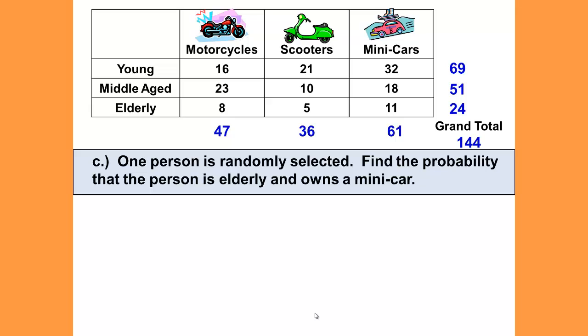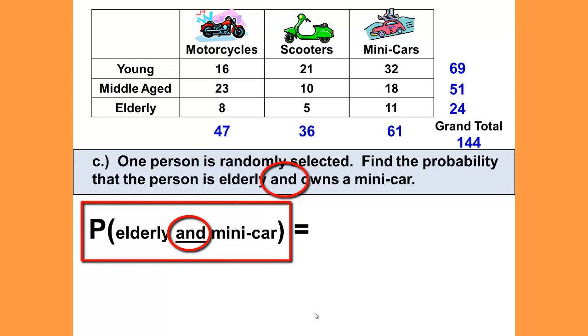Now on to question C. One person is randomly selected. Find the probability that the person is elderly and owns a mini-car. The keyword in this question is the word and. I like the notation that we've written here because it will help you to take ownership of the problem. When the problem is written in someone else's words, it is their problem and I'm trying to solve it. By writing it in my words and my notation, I can make it mine.